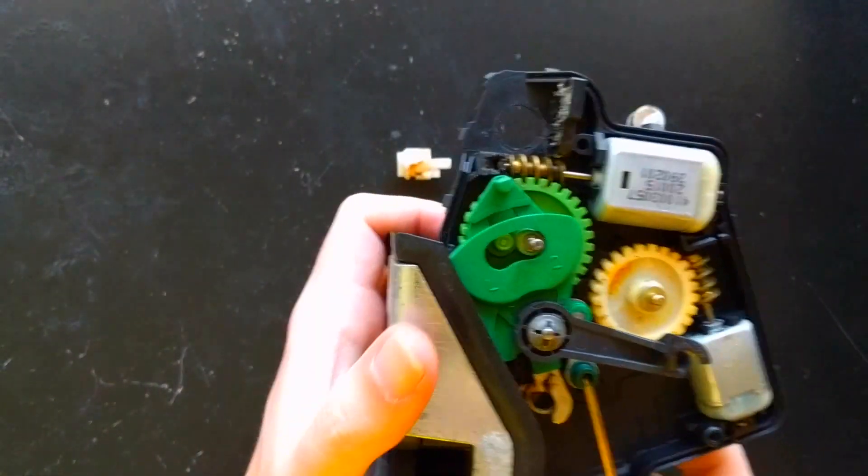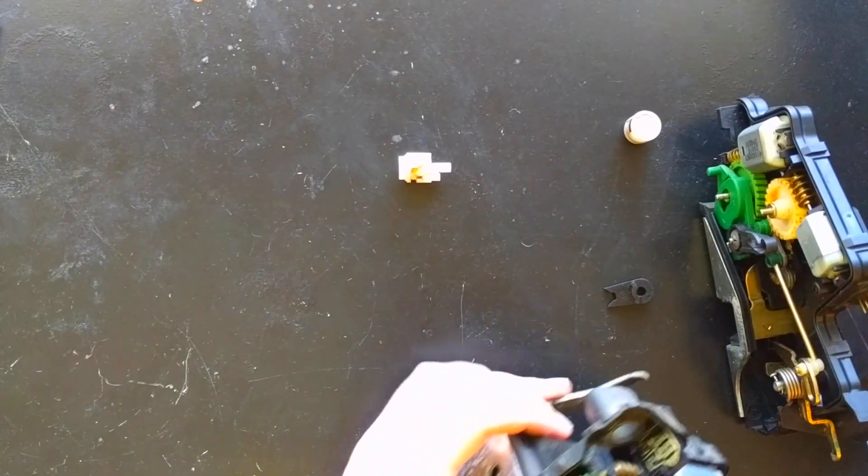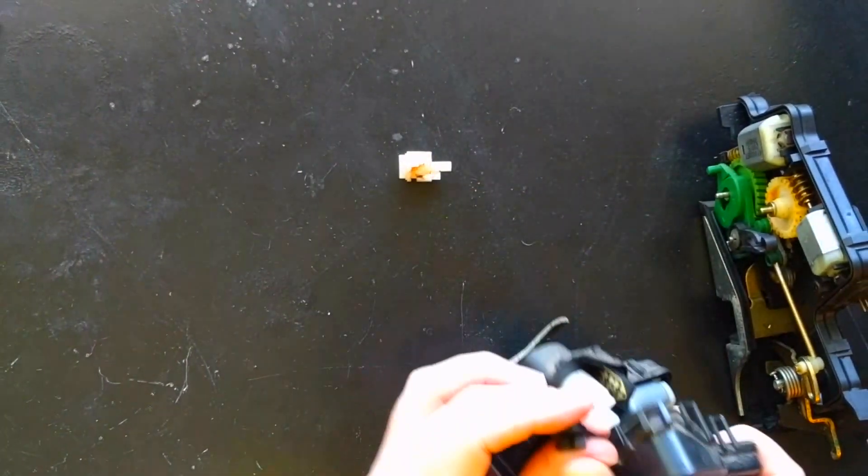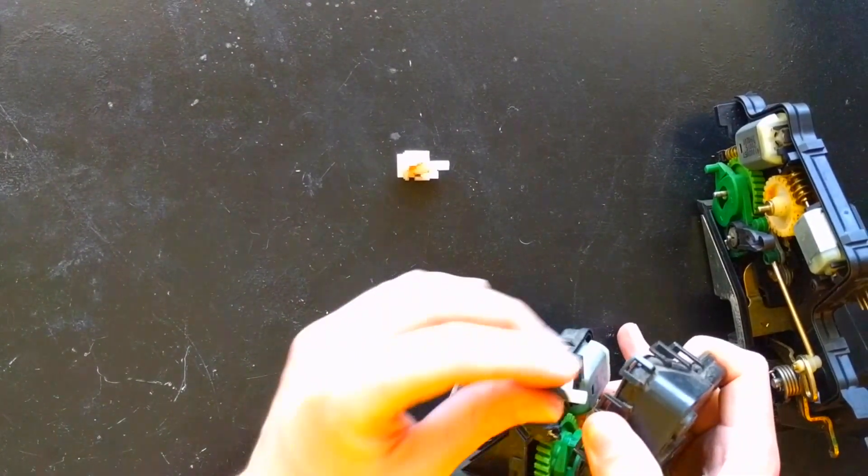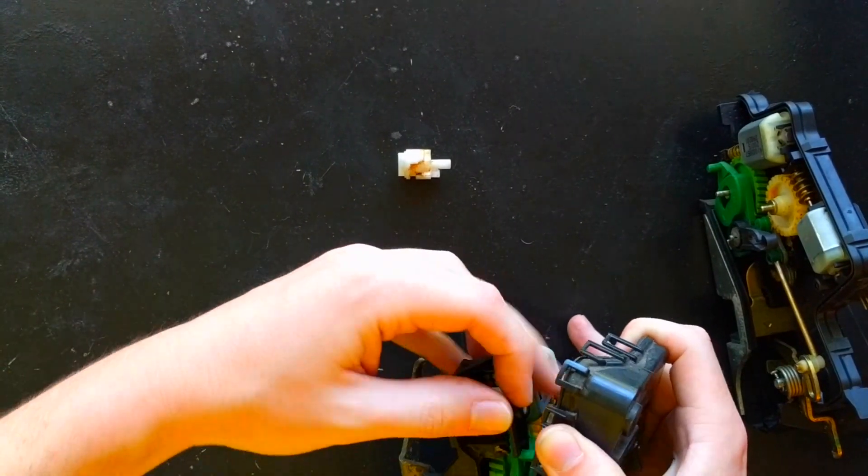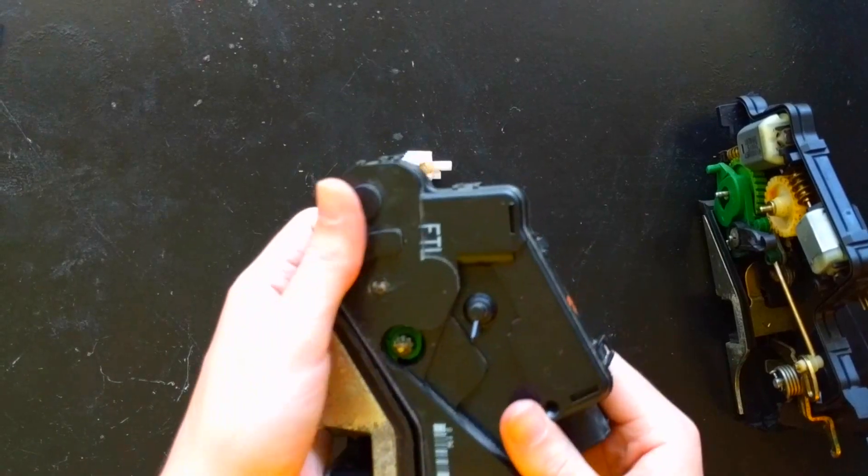So you just peel this back. Drop this in there. Drop this. And this part has to cradle the green thing. And when that's in there, you can snap this all back on. If you get it all lined up, it should work. And you have to test.